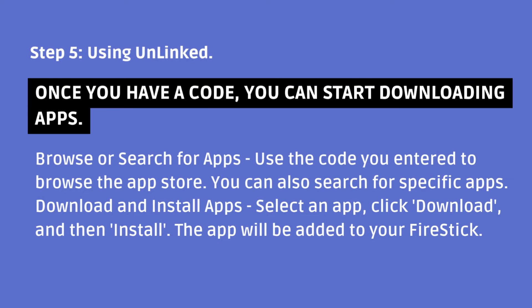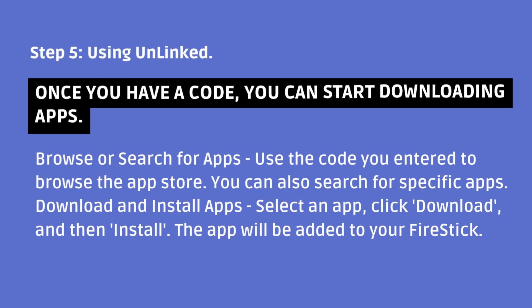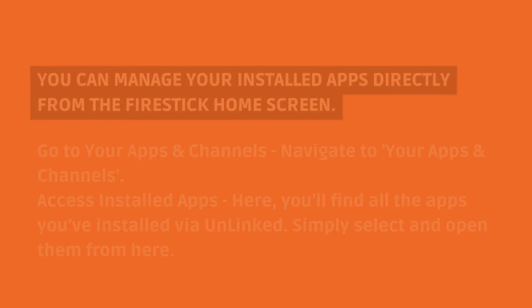Step 5: Using Unlinked. Once you have a code, you can start downloading apps. Use the code you entered to browse the app store — you can also search for specific apps. To download and install apps, select an app, click Download, and then Install. The app will be added to your Fire Stick.